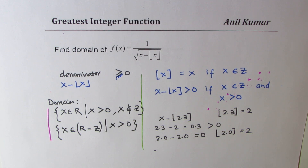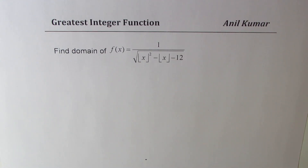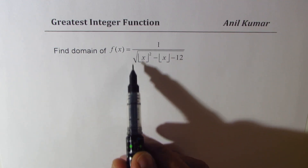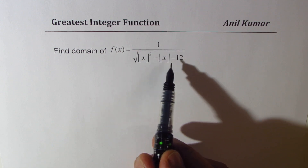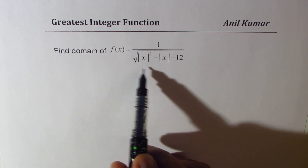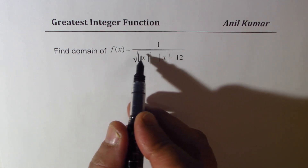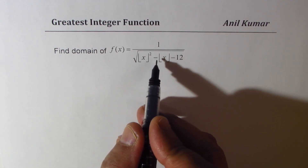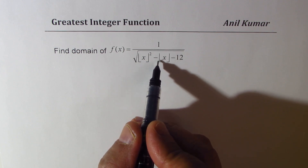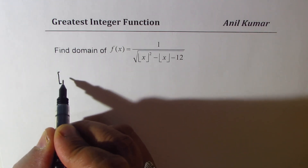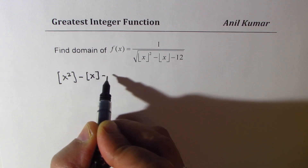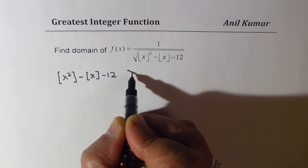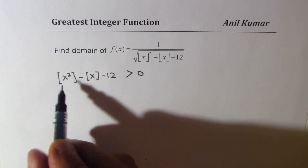Now let's take the last example: find the domain of f(x) = 1 / √(⌊x⌋² − ⌊x⌋ − 12). Since this is inside a square root and in the denominator, the expression inside must be strictly greater than 0. So the condition is ⌊x⌋² − ⌊x⌋ − 12 > 0.